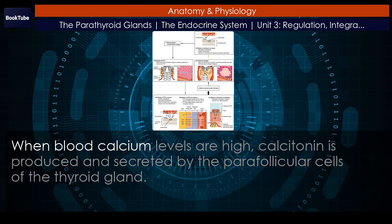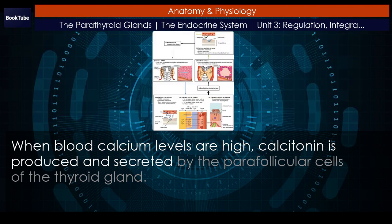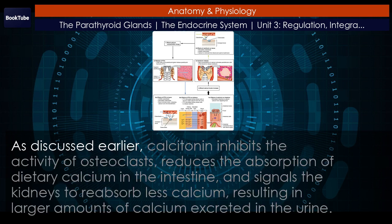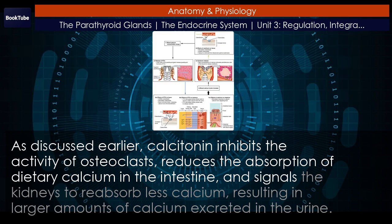When blood calcium levels are high, calcitonin is produced and secreted by the parafollicular cells of the thyroid gland. Calcitonin inhibits the activity of osteoclasts, reduces the absorption of dietary calcium in the intestine, and signals the kidneys to reabsorb less calcium, resulting in larger amounts of calcium excreted in the urine.